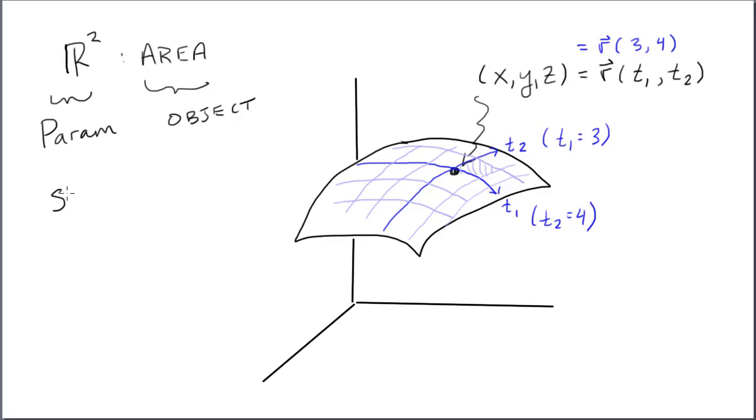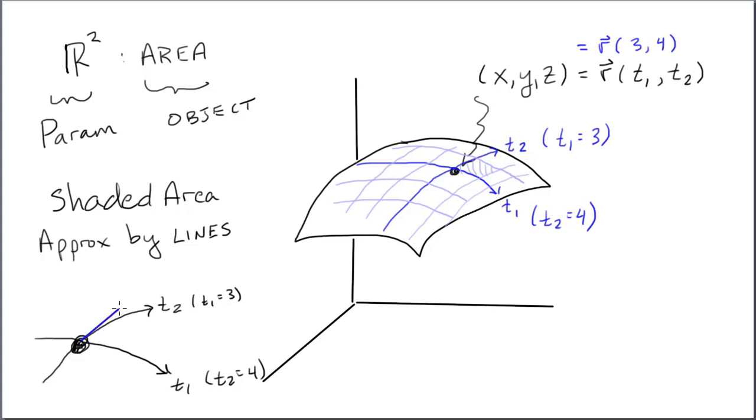This shaded area is a surface element and we're going to approximate it with a differential. The differential will be made up by tangent line pieces to those grid curves. So we'll focus in just on the point in question, parameter value (3, 4). And we'll disregard the rest of the drawing for now, because it doesn't matter. We'll get our little grid lines.